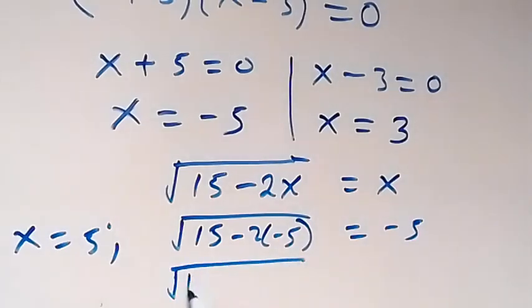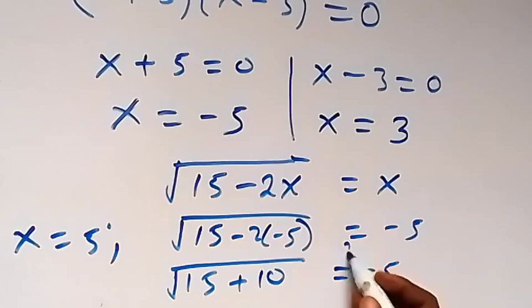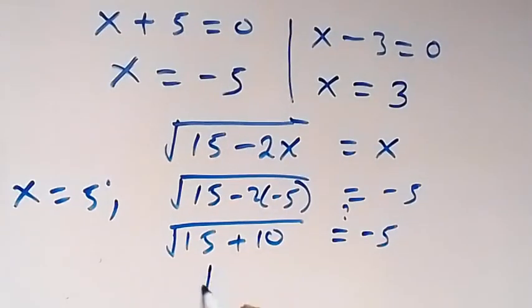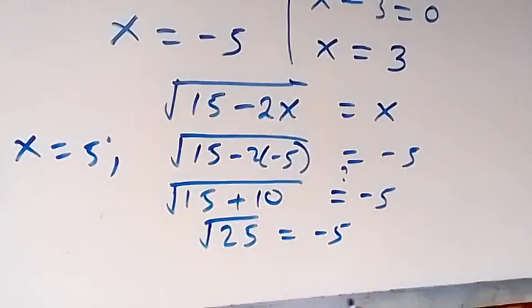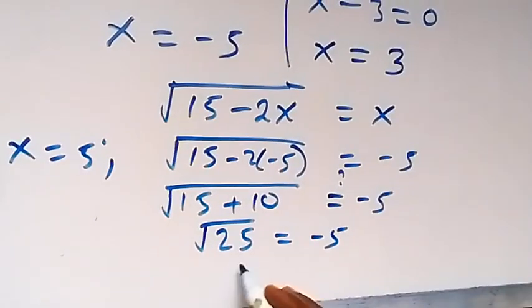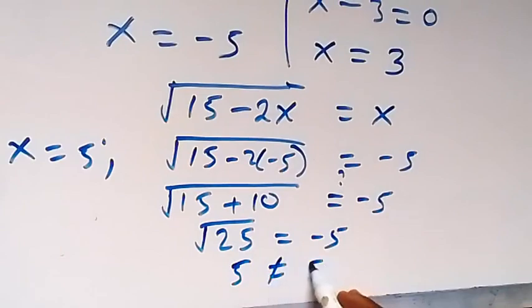This is square root of 15 plus 10. And this equals to minus 5, and we have root 25, which is equal to minus 5. Root 25 is 5, which is not equal to minus 5. So x equals to minus 5 is an extraneous solution.